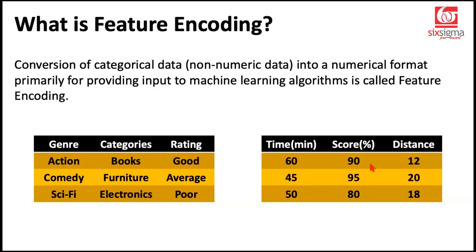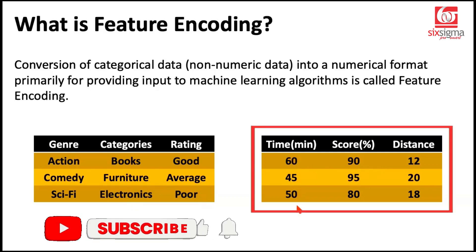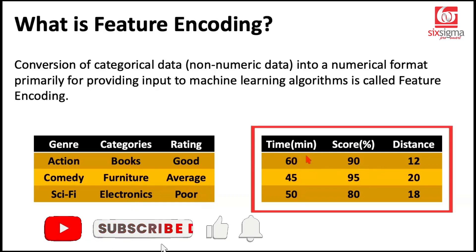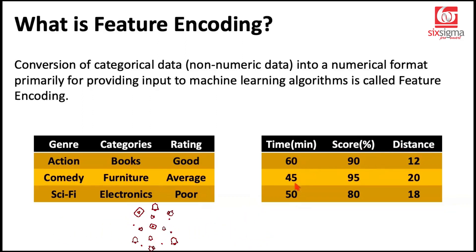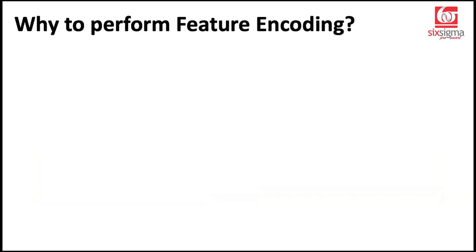On the right, we have a very interpretable table which is a collection of numbers. We could be talking about time, a score obtained out of 100, or distance from one place to another. These numbers could be rounded-off integers or floating point values with decimals. But end of the day, these are numbers, and we can meaningfully perform all arithmetic operations on them.